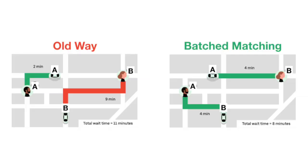A while back we published a video explaining how Uber matches passengers with drivers. Instead of always matching a rider with the nearest driver, Uber uses a process called batch matching which is more efficient. The gist of that is Uber wants to reduce wait times overall, so sometimes the nearest driver may be routed to another request in order to reduce the wait time for that specific request. It may extend the wait time for the nearest passenger by a few minutes but it reduces the overall wait time between both requests.